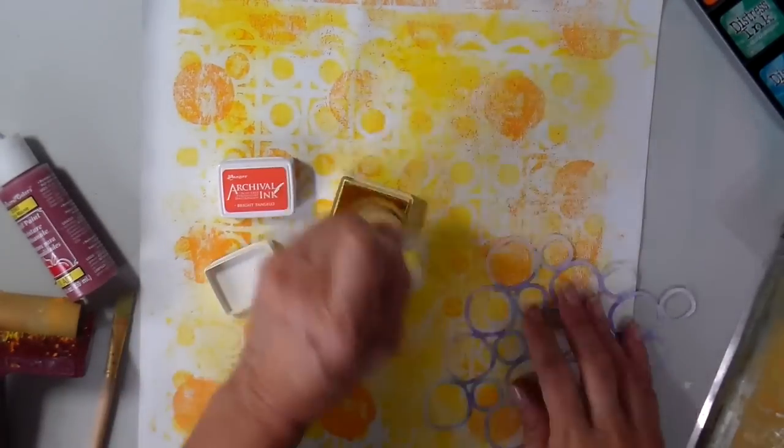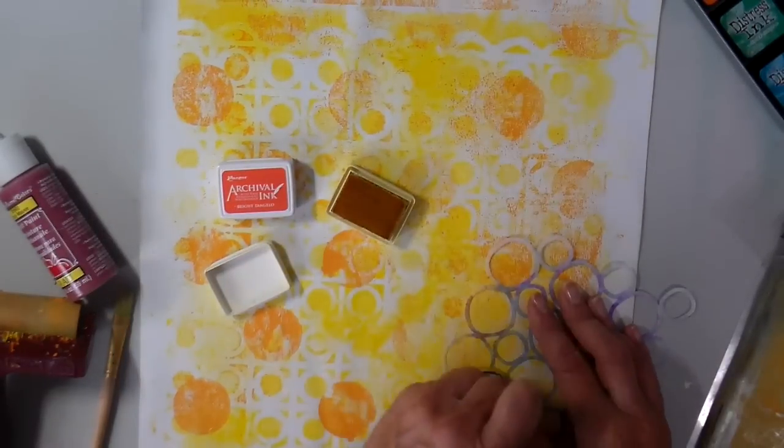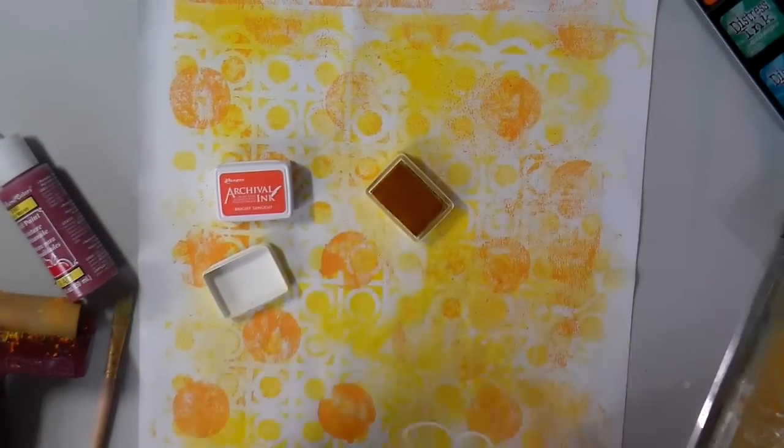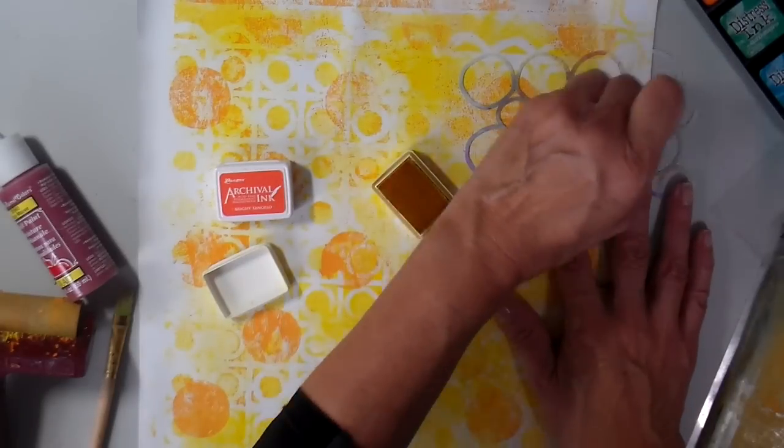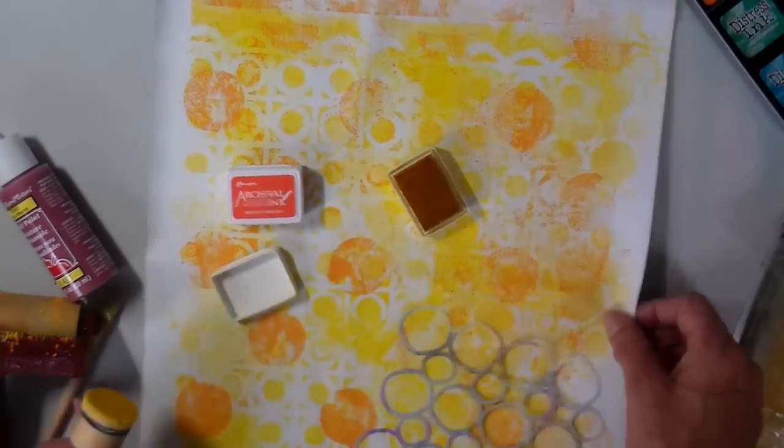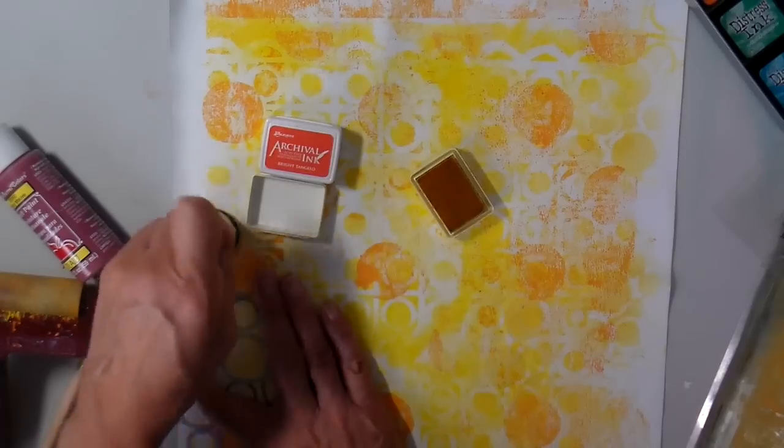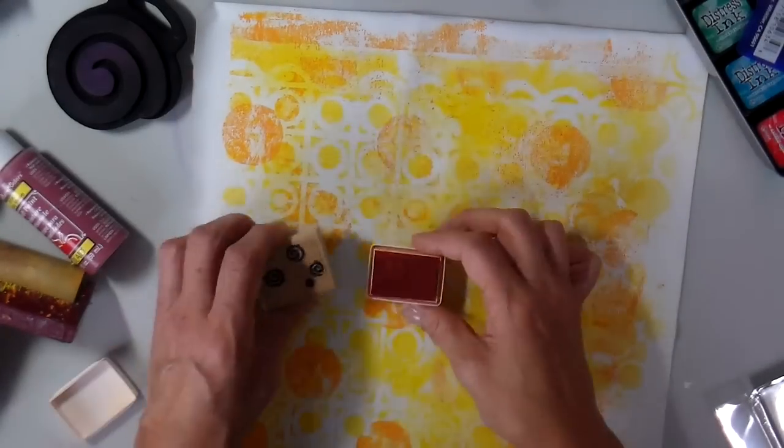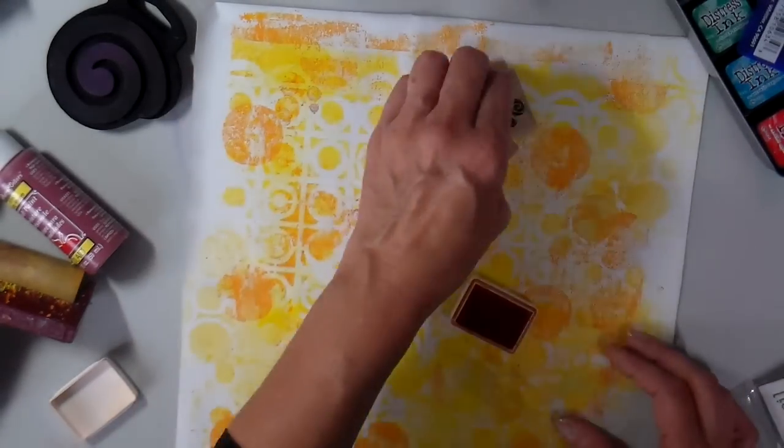Remove that jelly plate now and I'm just adding some more color through the stencil. This is the archival ink that I'm using and this is the pebble stencil. This is a newer stencil of mine that I really love for backgrounds. Just using a blending tool from Tim Holtz to get that color through those stencils.